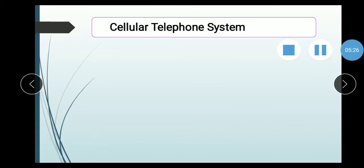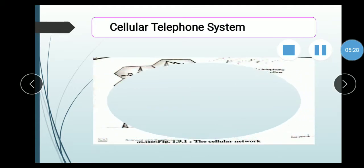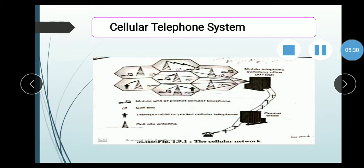Next is the Cellular Telephone System. Now we will see the working of the cellular telephone system. For example, our city — we have divided the city into areas. In each area there is one tower, and various phones are used. The cellular telephone system is basically a wireless telephone system and it is a multi-user system.